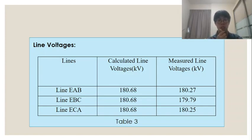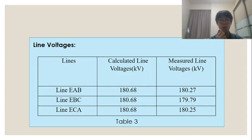Table 3 shows the line voltages. The calculated value of line voltages for lines EAB, EBC, and ECA are the same, at 180.68 kV. The measured line voltage for line EAB is 180.79 kV, and the measured line voltage for line ECA is 180.25 kV.